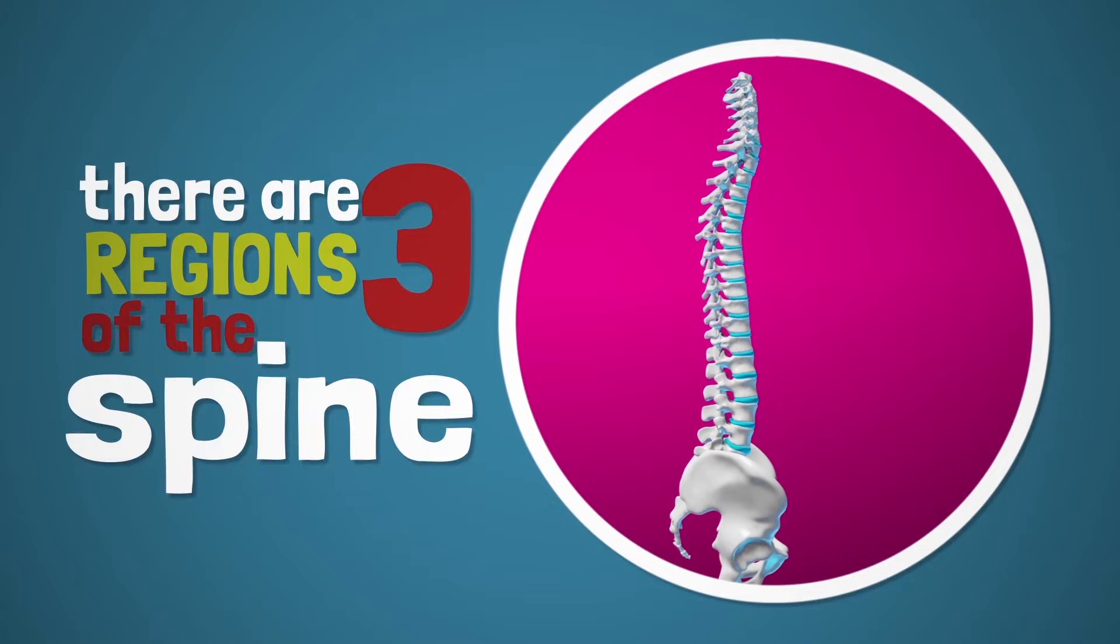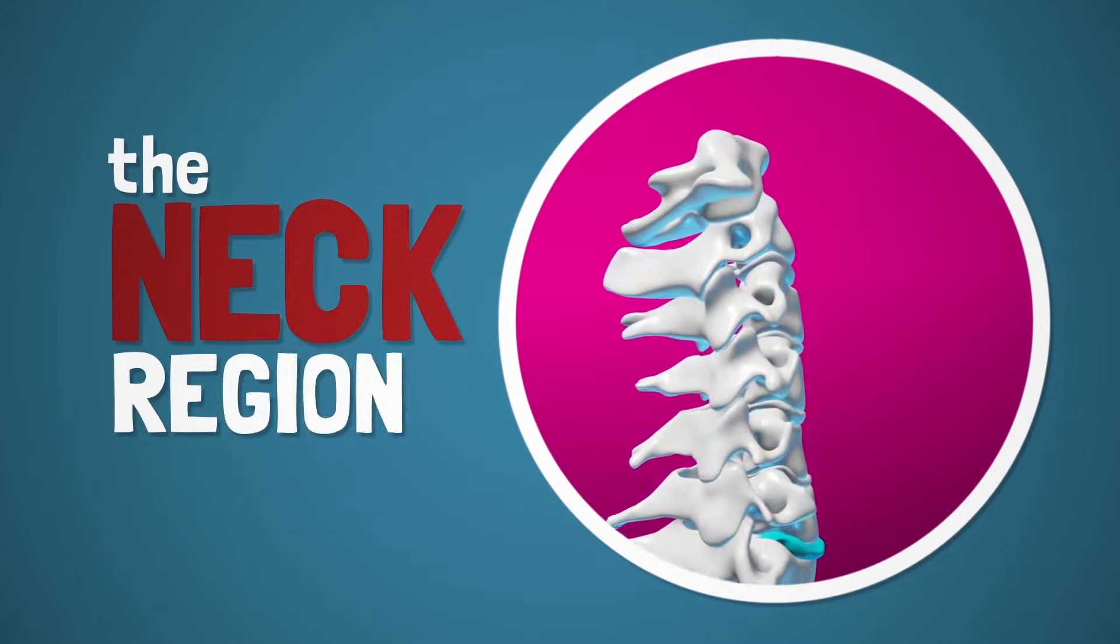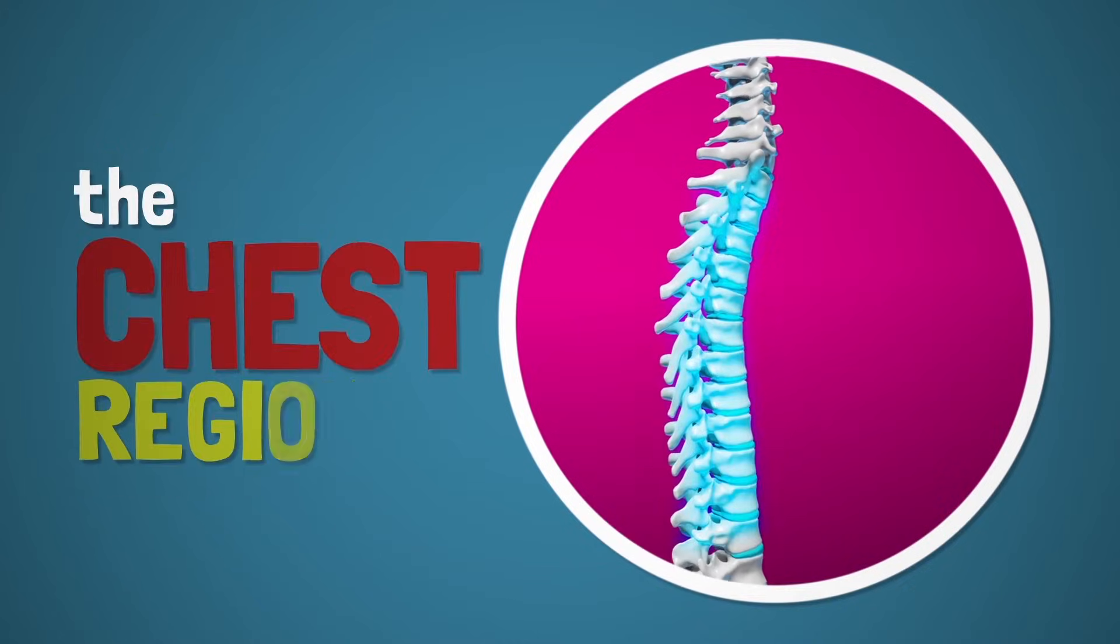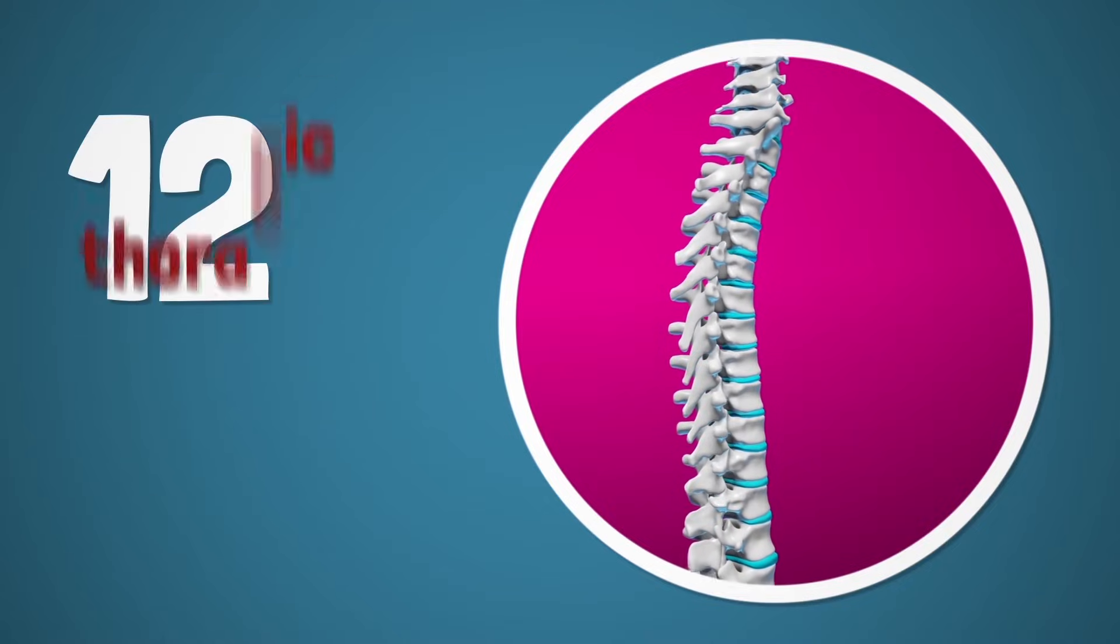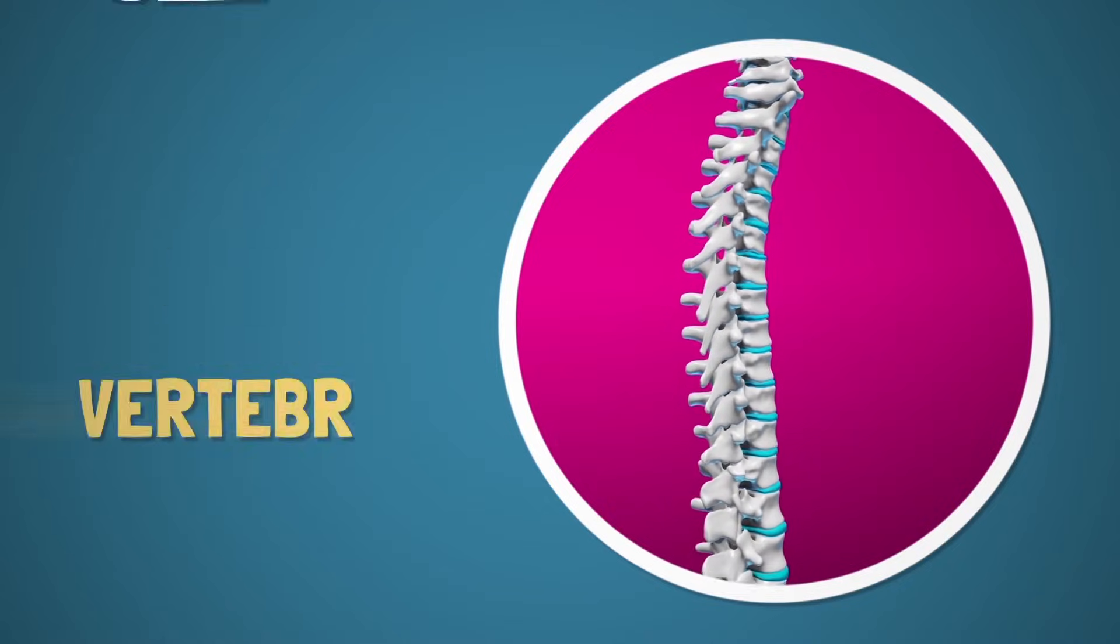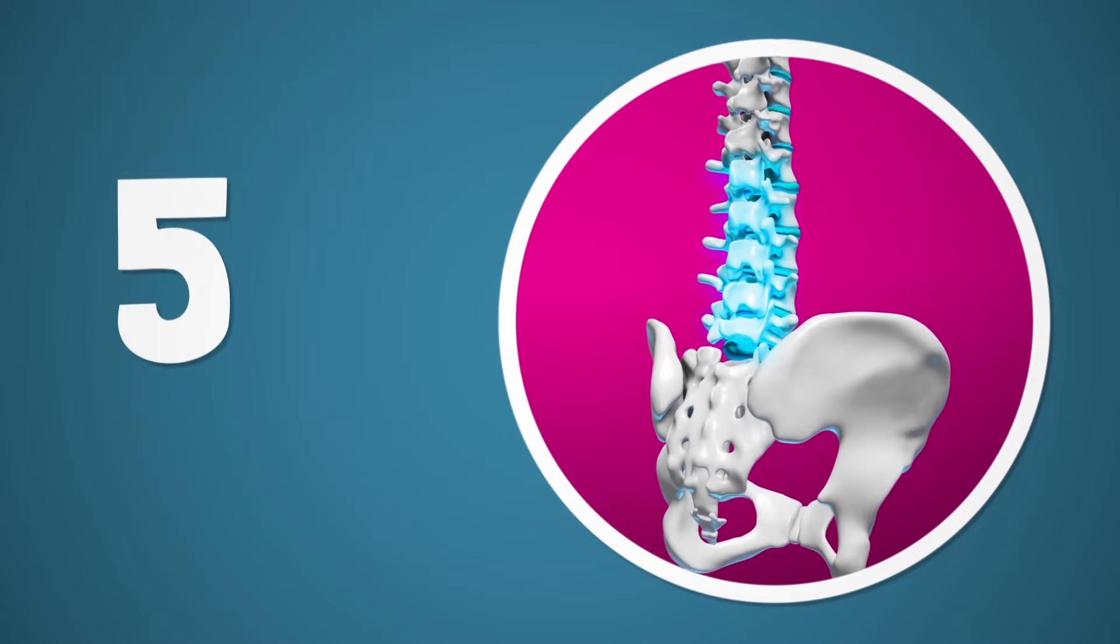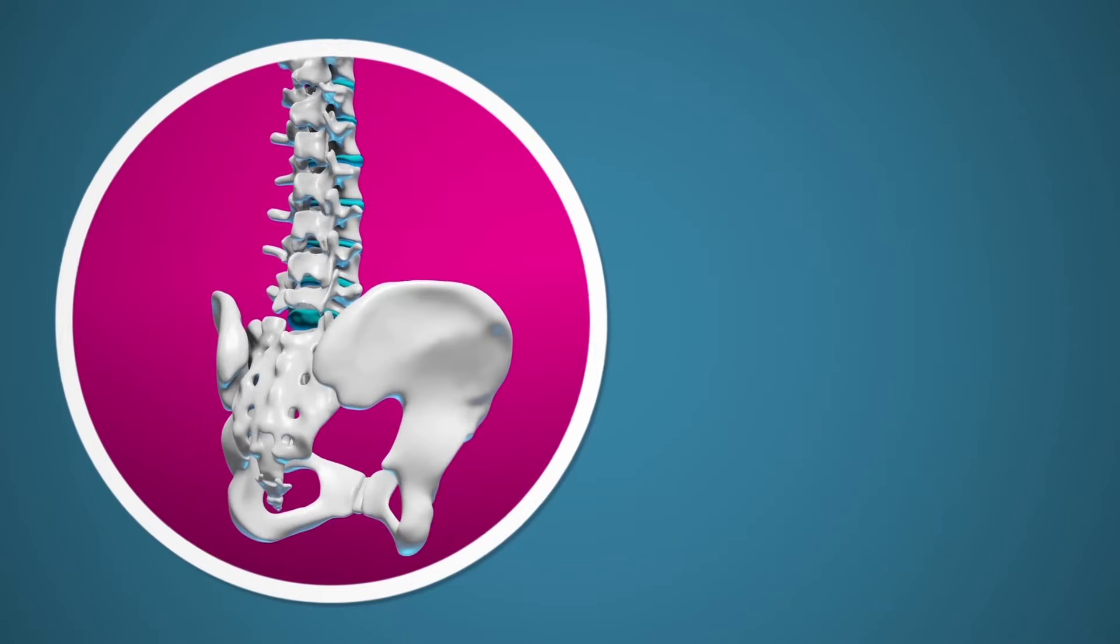There are three regions of the spine. The first is the neck region, which has seven cervical vertebrae. The second is the chest region, which has 12 thoracic vertebrae. And the third is the lower back region, which has five lumbar vertebrae.